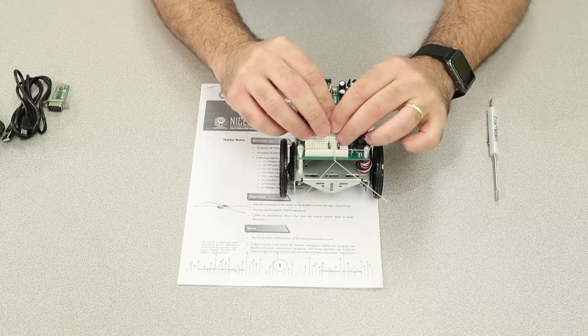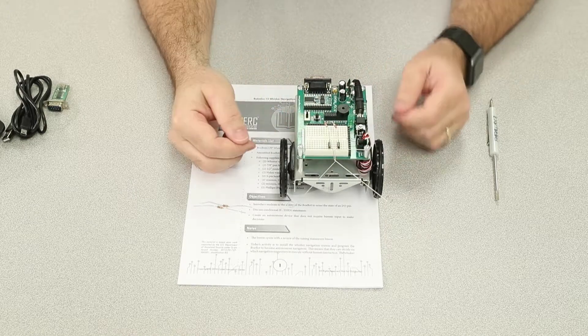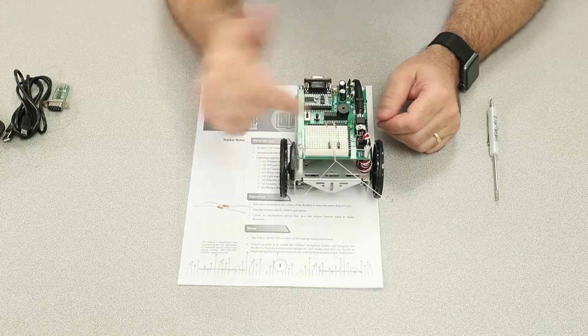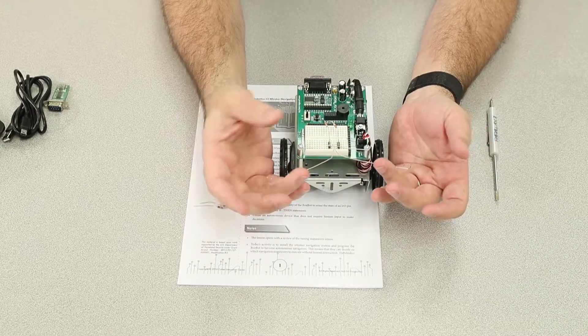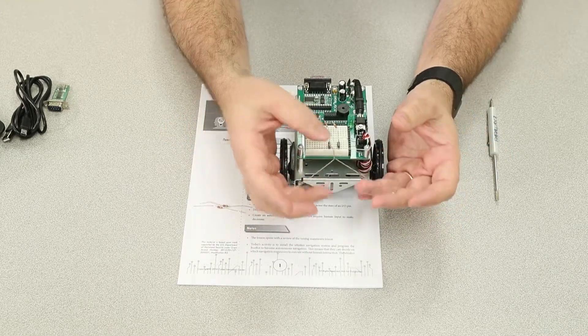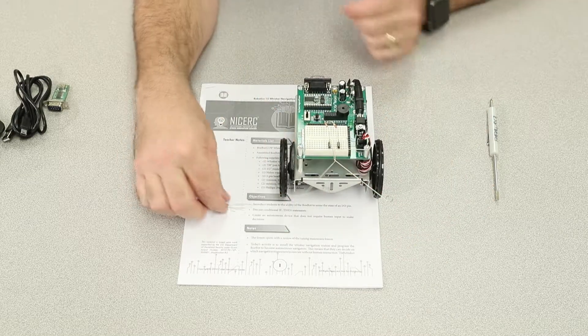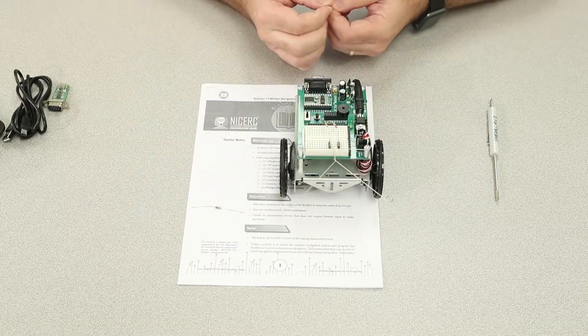So through these two resistors, the Bobot's able to monitor the signals coming from these two rows. Right now, there's nothing happening yet. Even if I were to make this connection, nothing would be happening yet. All we'd be doing is connecting the whiskers, connecting this circuit to ground. But since there's no voltage, there's going to be nothing to monitor.